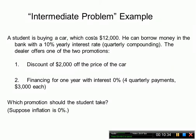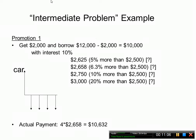Here is an example of an intermediate problem. A student is buying a car costing $12,000. He can borrow from a bank at 10% yearly interest with quarterly compounding. The dealer offers two promotions: a discount of $2,000 off the price, or financing for one year at 0% interest with four quarterly payments of $3,000 each. Which promotion should the student take, assuming inflation is 0%?